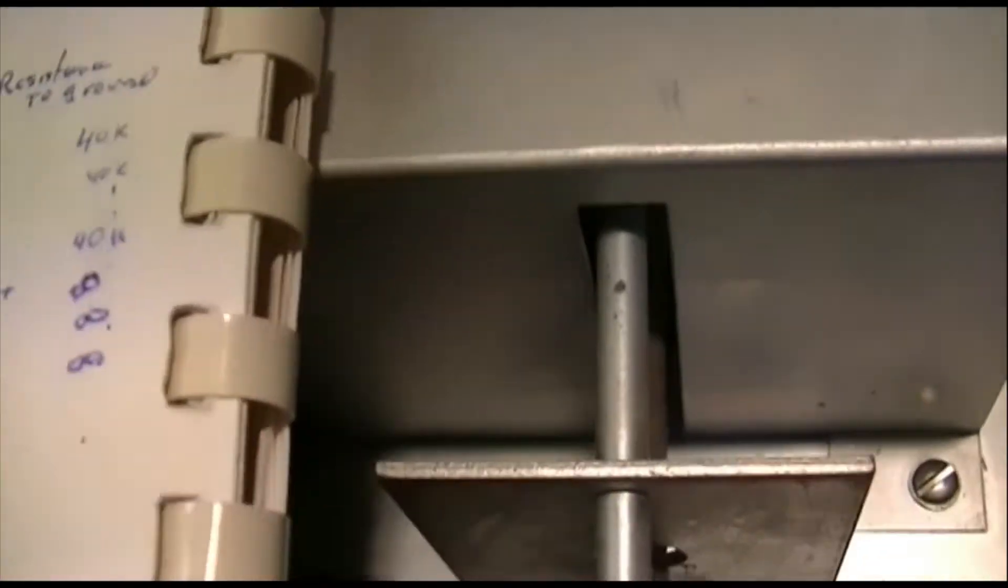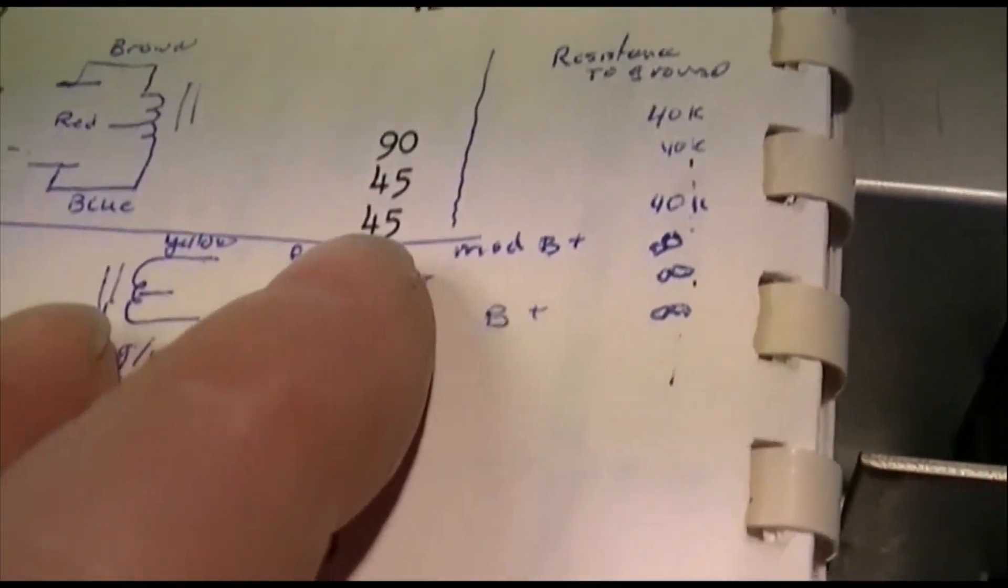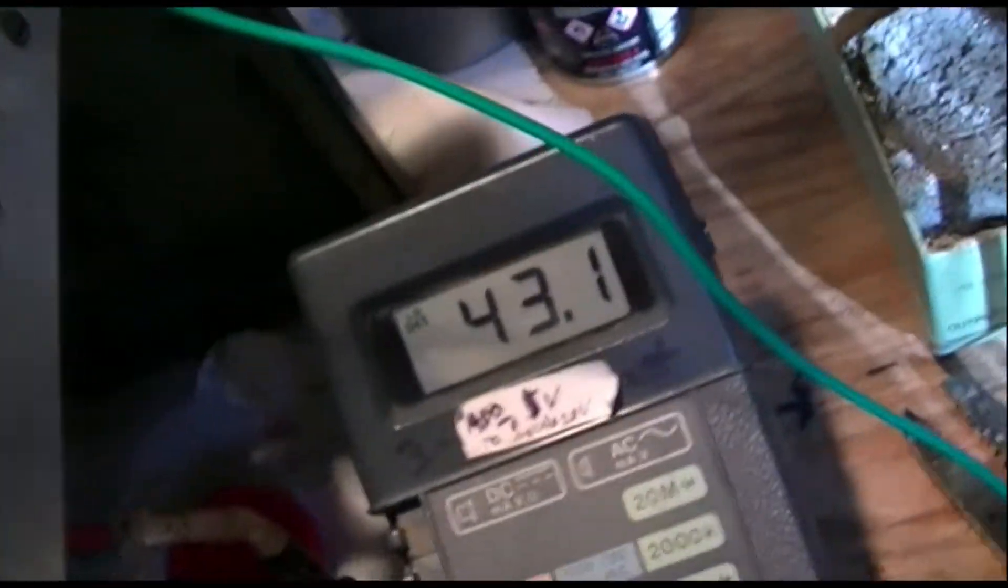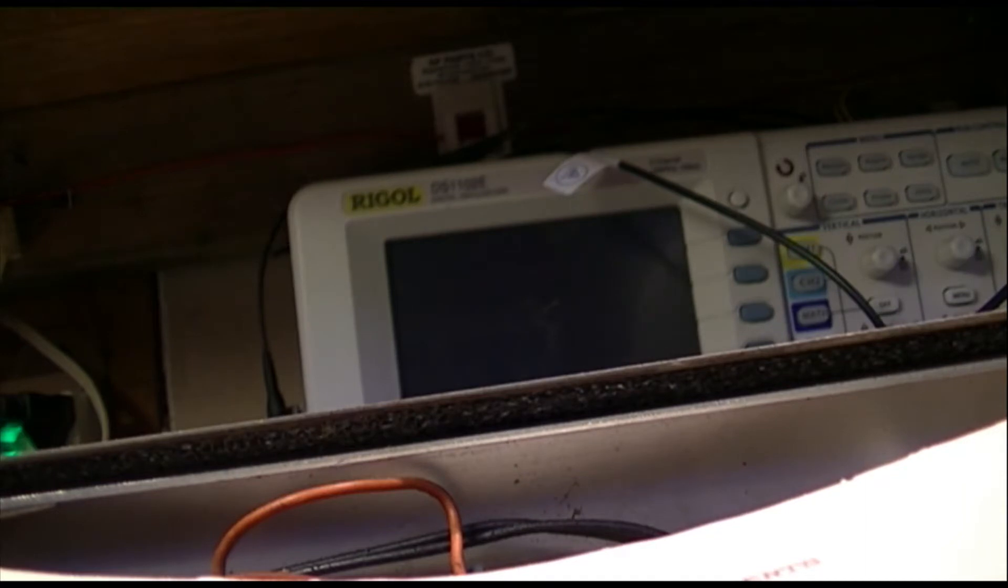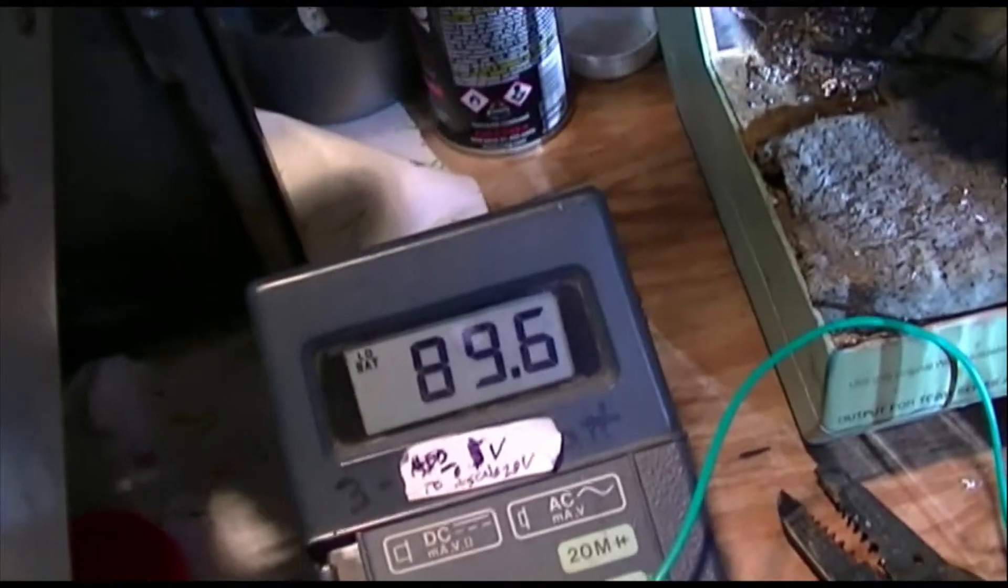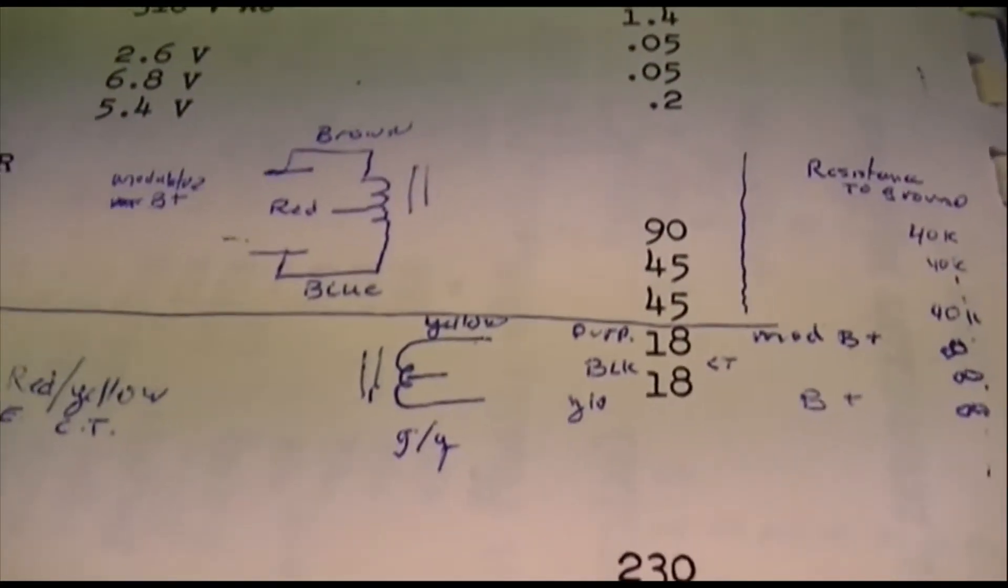These connections are not real swift and when you're using clip leads like this you can have some error, but these things are pretty good. If you measure between the two of them, you should read about 90 ohms. There we are, 89, 90 ohms, so we're doing real good.